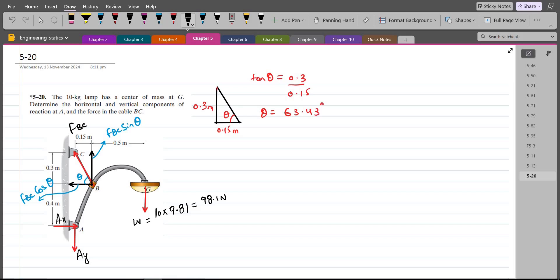Now we can apply the equations of equilibrium. So our first equation would be summation of moments at point A equals to 0. I am considering counterclockwise direction as positive. So AX and AY will not produce any moment about point A because they are passing through it.